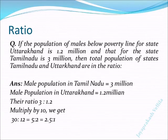Dear friends, today's question is: if the population of males below the poverty line for the state Uttarakhand is 1.2 million, and that for the state Tamil Nadu is 3 million, then what is the total population ratio of Tamil Nadu to Uttarakhand?